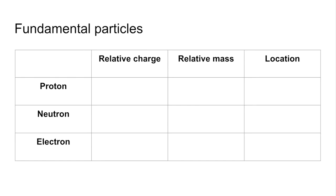So we'll start with the relative charges. Proton is one plus, neutron is zero and electron is one minus.